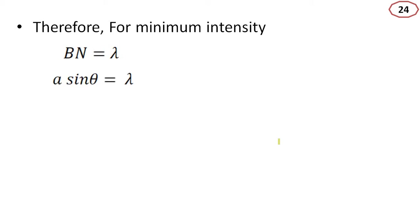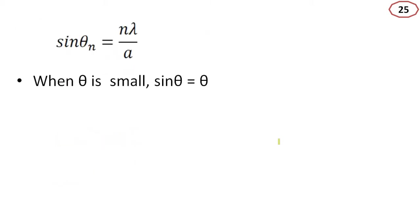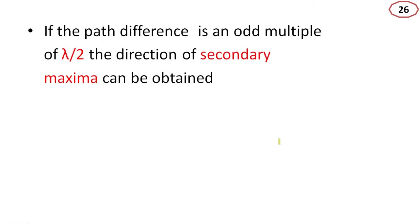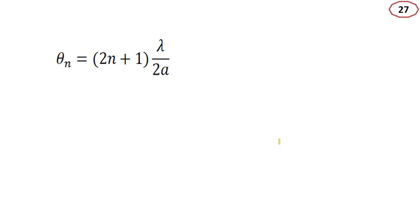In general, a sin theta_n equals n lambda, or sin theta_n equals n lambda by a. When theta is small, sin theta equals theta, so the equation becomes theta_n equals n lambda by a, where theta_n gives the direction of the nth minimum. Similarly, the direction of secondary maxima is given by a sin theta_n equals (2n+1) lambda by 2, or theta_n equals (2n+1) lambda by 2a.